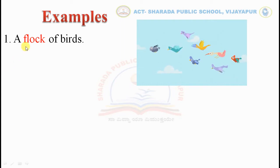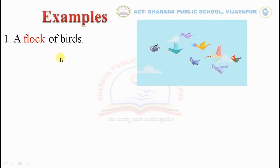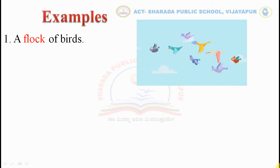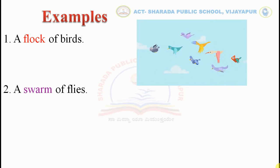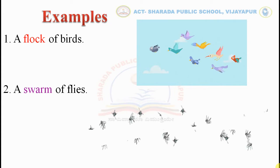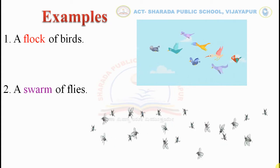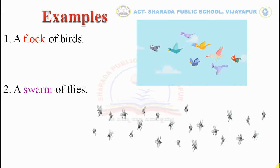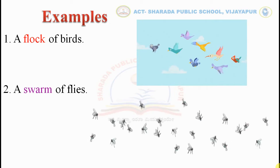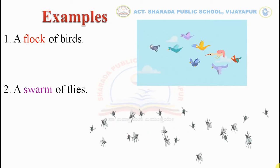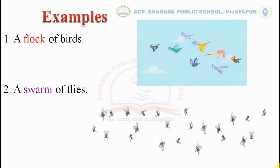Here, a flock refers to a group of birds. A swarm of flies — here, a swarm refers to a group of flies.